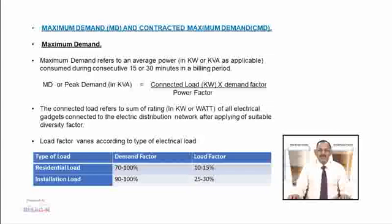Maximum demand or peak demand in kVA equals connected load in kW multiplied by demand factor, divided by power factor. The connected load refers to the sum of ratings in kW or watt of all electrical gadgets connected to the electric distribution network after applying suitable diversity factors. The load factor varies according to the type of electrical loads.